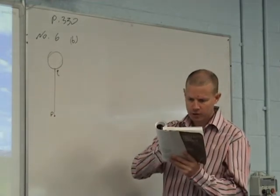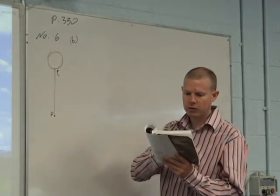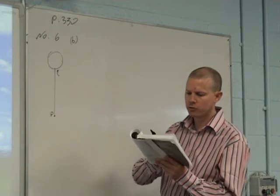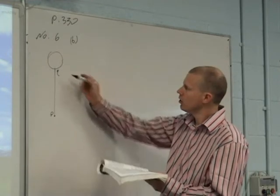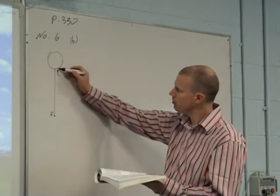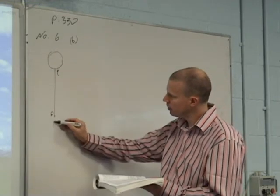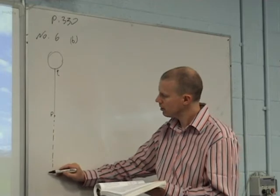In fact, the question says find its angular speed when this, and the speed of the center of the disk, when Q is vertically below the point P. So the only way that can be below the point P is if the whole thing swings down and you get it down to there.